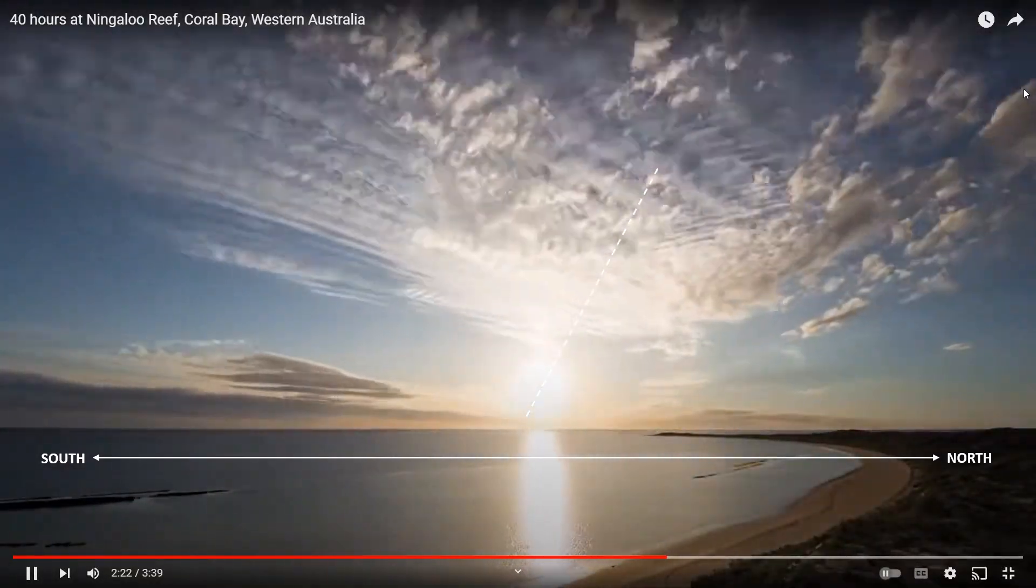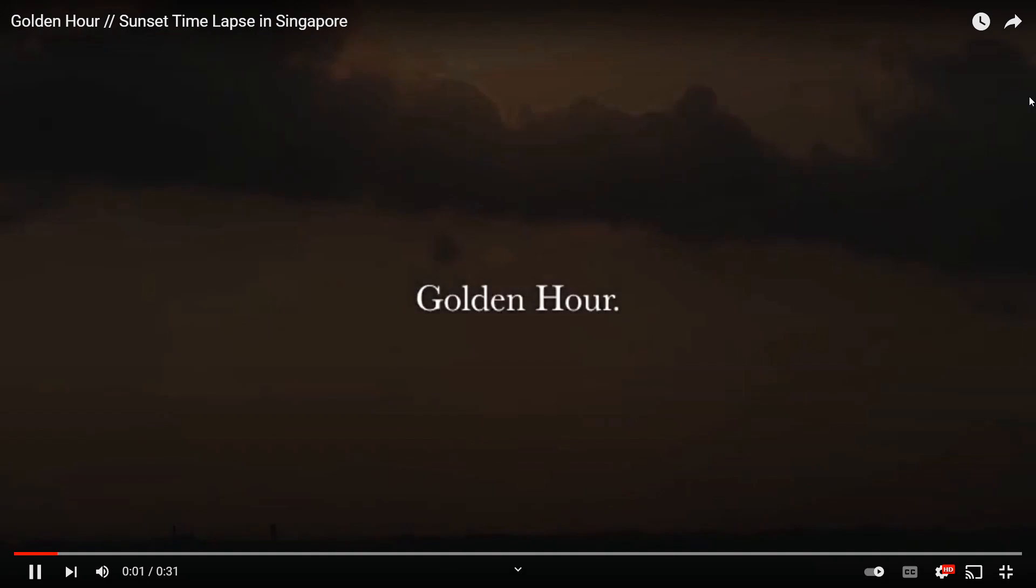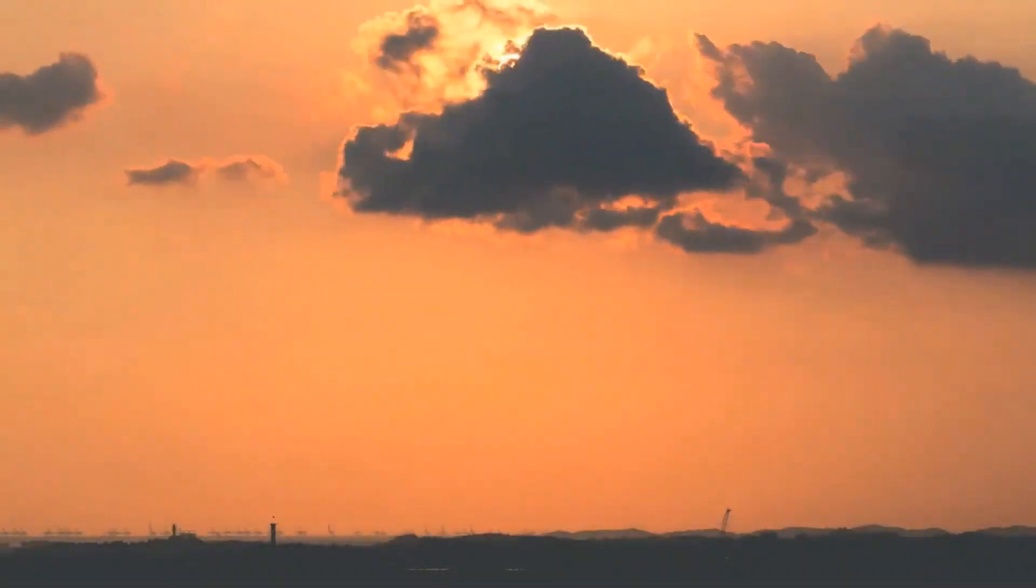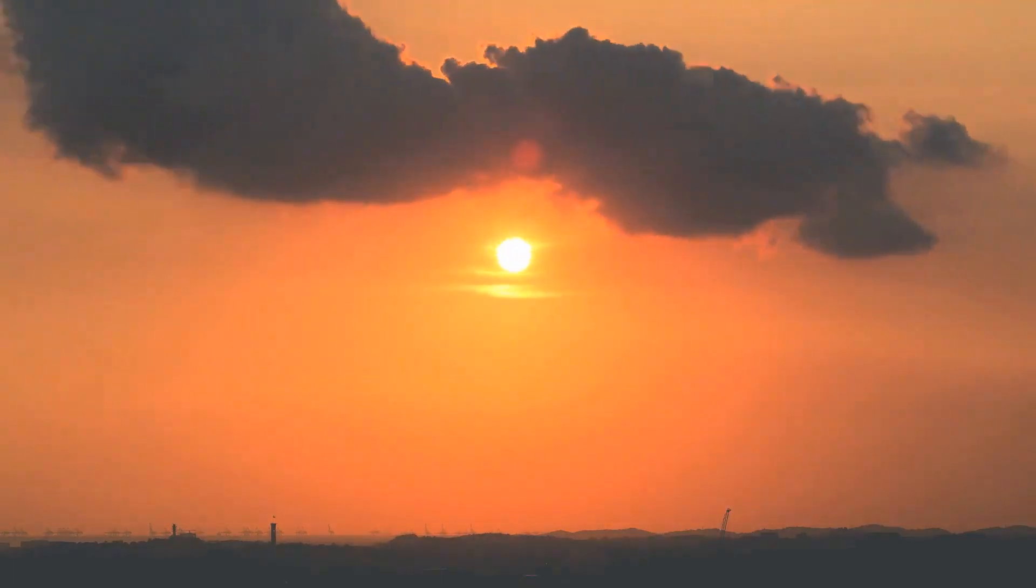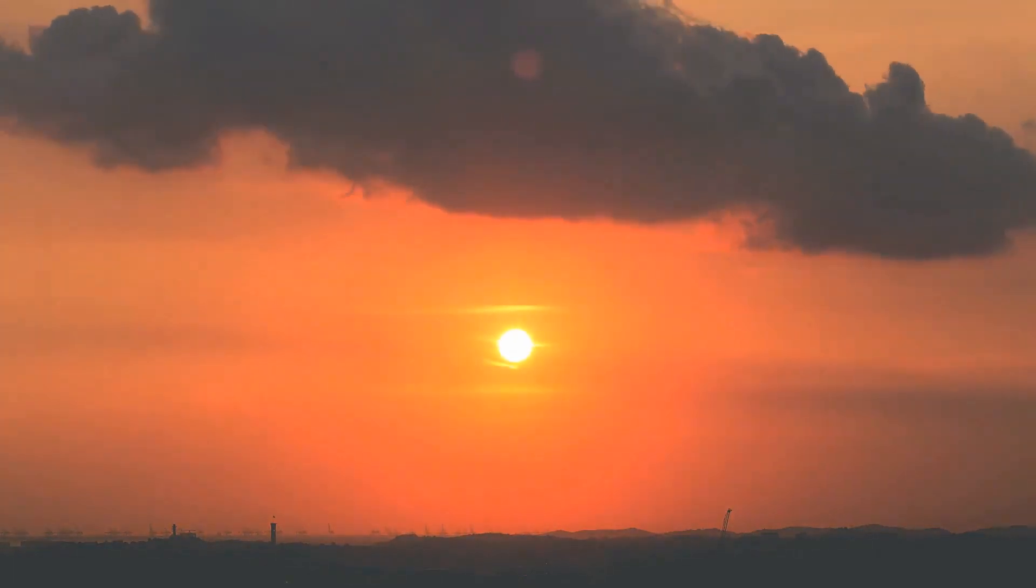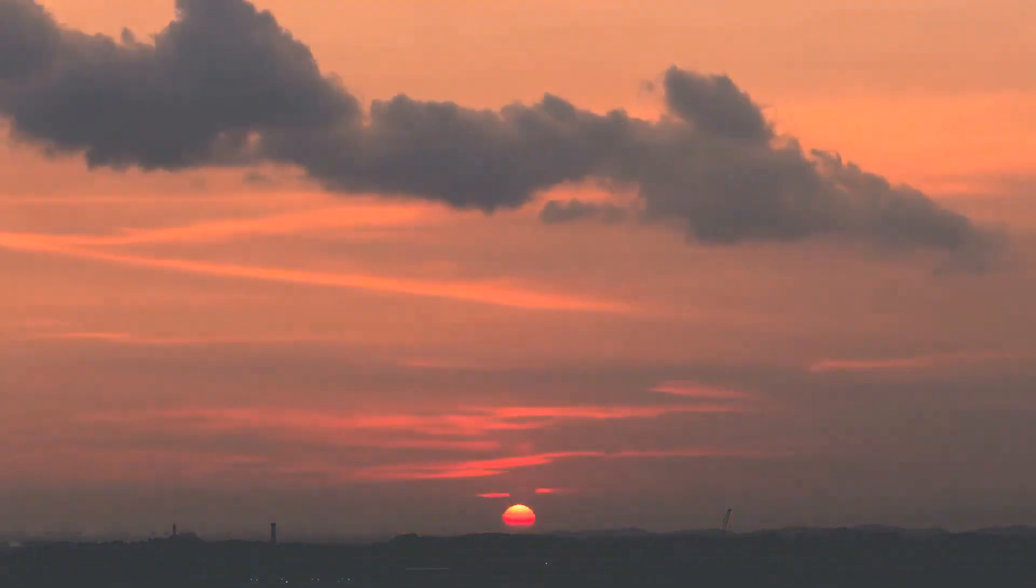Now if the Earth was really flat it makes logical sense that everybody should see a Sun that is orbiting around the North Pole. But what we actually see are Sun paths that are completely different for all three of these locations. Now here is one last sunset time-lapse from Singapore which is on the equator. And as you can see that Sun is setting perpendicular to the horizon. This will help us understand why these observations work on the globe.